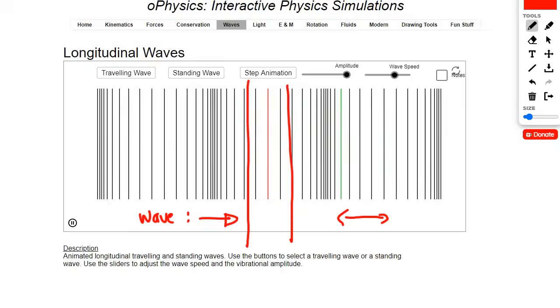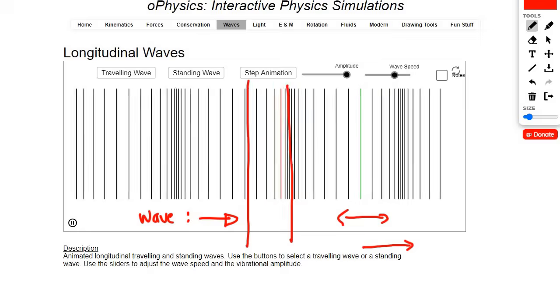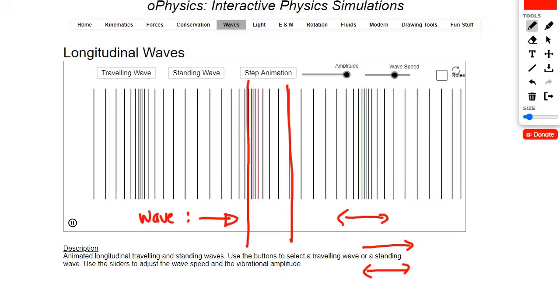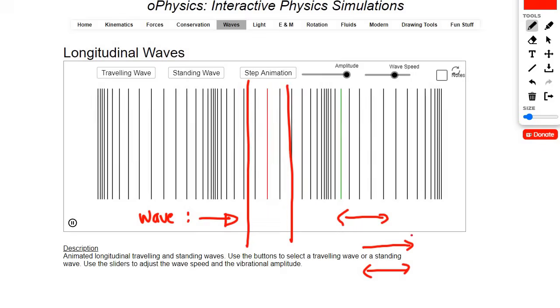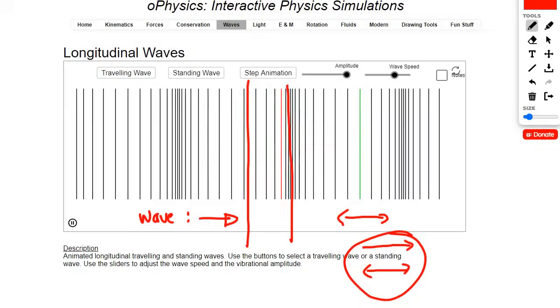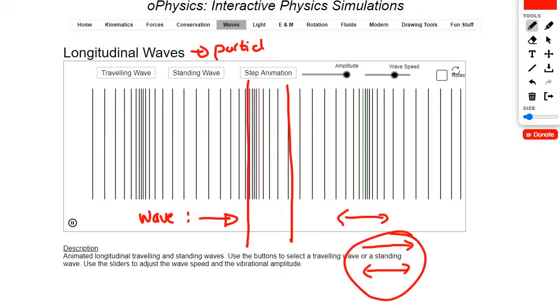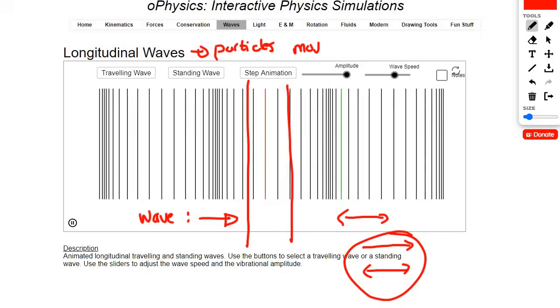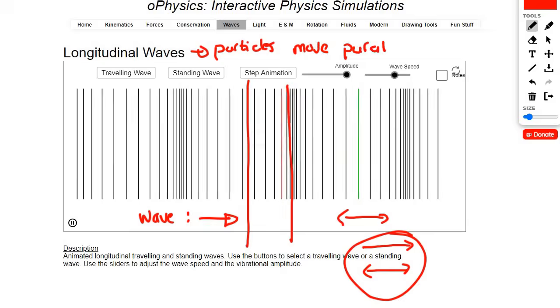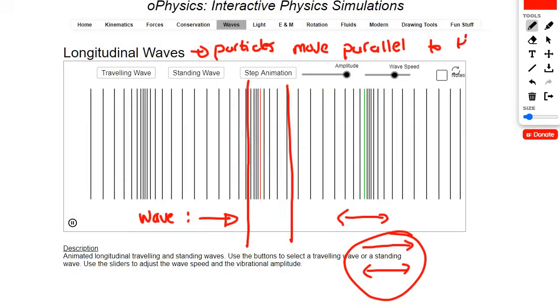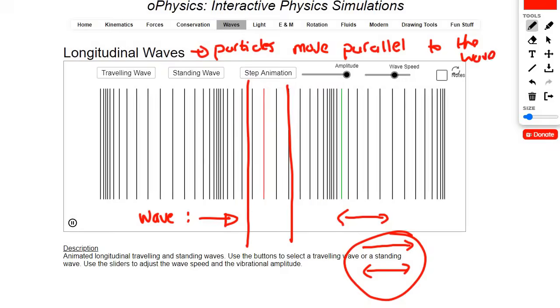So this is what makes longitudinal different to transverse. Because what we have now is a wave that's moving to the right, and the particles are moving in the same type of direction. They're not moving at 90 degrees. And so when you have a longitudinal wave is when the particles move parallel to the wave.